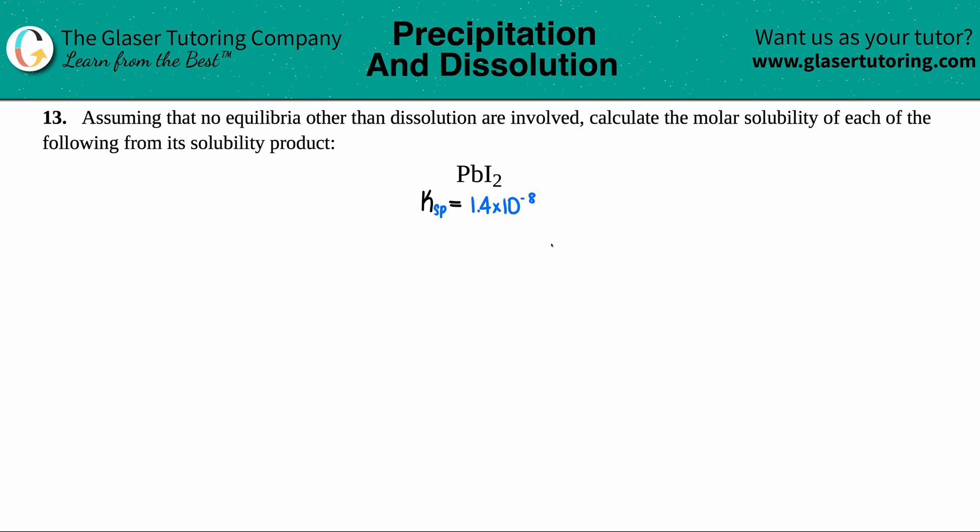Number 13. Assuming that no equilibria other than dissolution are involved, calculate the molar solubility of each of the following from its solubility product. We have PbI2. So we have to find the molar solubility of PbI2 from its solubility product.